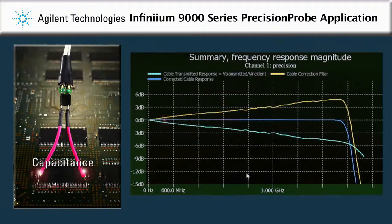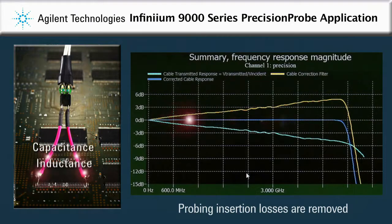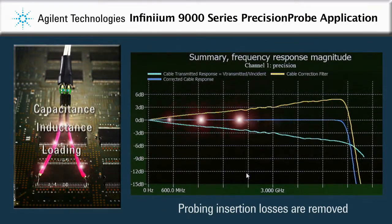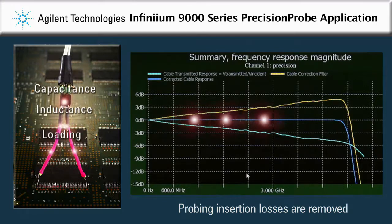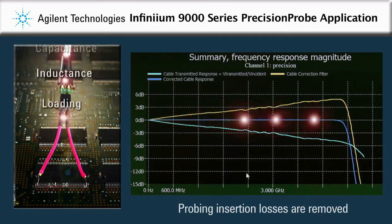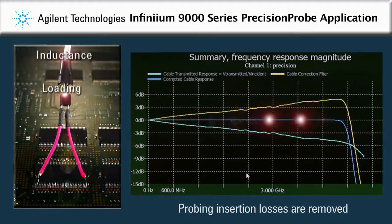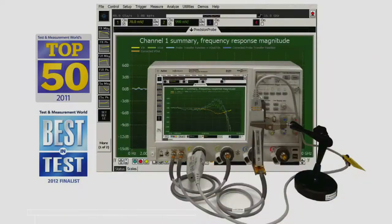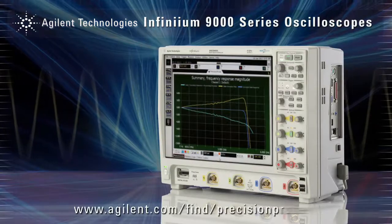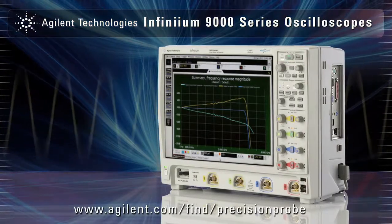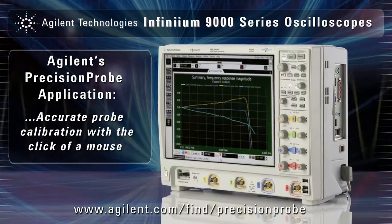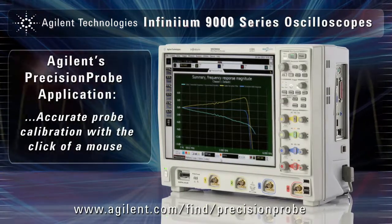The scope applies this transform function continuously as you use this cable for other measurements and saves it for recall for future uses of the probing device. Agilent's precision probe application software is easy to use and assures the accuracy you deserve. Please go to the URL listed on this page or visit your local distributor for more information.